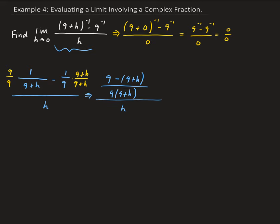We can think of the h on the denominator as h over one, so we go ahead and take the reciprocal of that. On the top here, this part is just nine minus nine minus h, so this gives us minus h on top. So we have minus h all divided by h times nine times nine plus h.